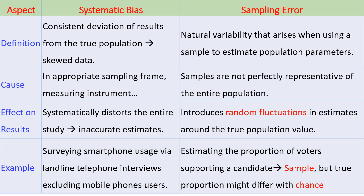To reduce the sampling error, we can either conduct a census or we can increase the sample size. Systematic bias has the effect of systematically distorting the entire study, leading to inaccurate estimates of the true population. The effects of sampling error on results are that it introduces random fluctuation and estimates around the true population value.